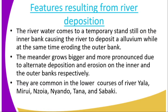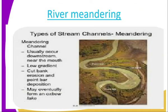The meander grows bigger and more pronounced due to alternate deposition and erosion on the inner and outer banks respectively. Meanders are common on rivers such as the Yara, Mirui, Zoya, Nyando, Tana, and Sabaki. You can see how the channel is eroding on the outer bank and depositing materials at the inner bank.